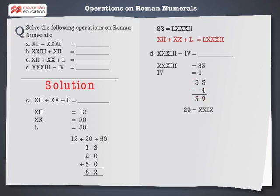Now convert the result into Roman numerals. 29 is equal to XXIX. Hence, XXXIII minus IV is equal to XXIX.